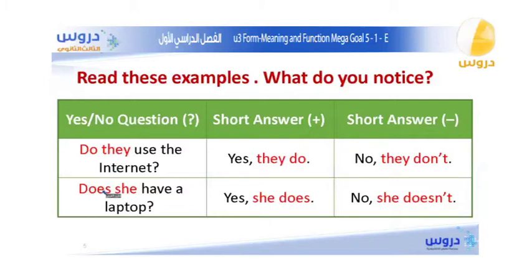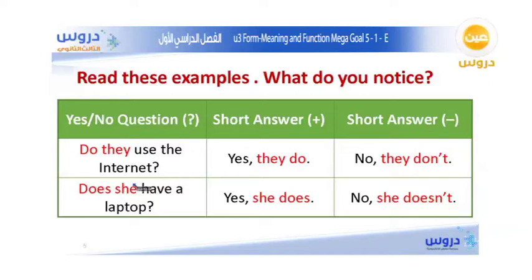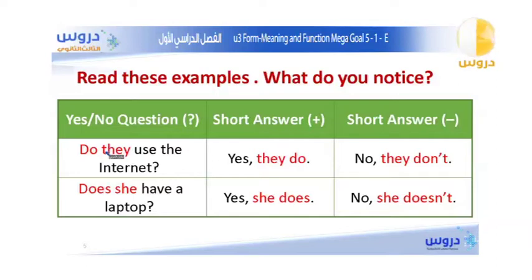And does comes with subject pronouns like she and he. So this is what you use to make a yes or no question in the simple present tense — either do or does, depending on the subject.